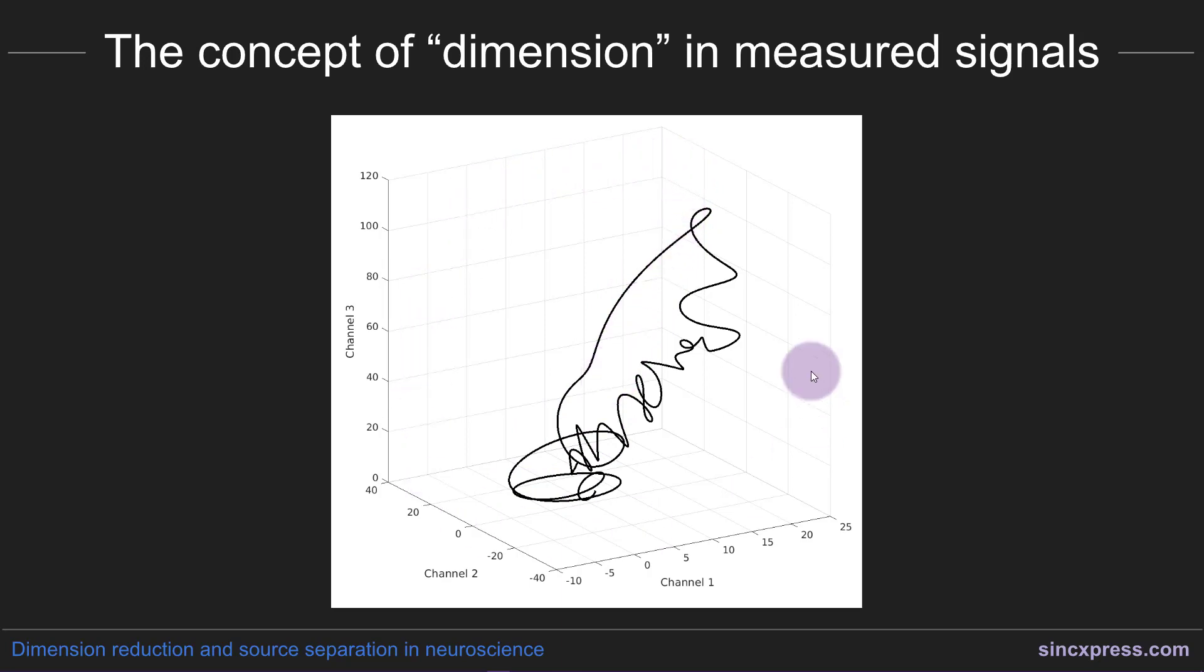You have this huge three-dimensional space where there could in theory be activity, and yet for whatever reason the activity that we measured in this time window is restricted to this very specific little trajectory here.